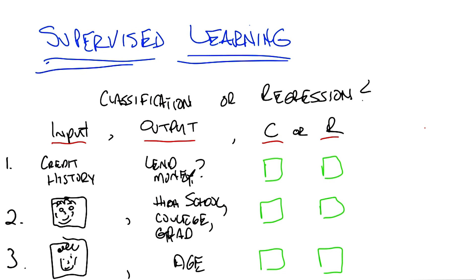Let's give the explanation for the quiz. In some cases, the inputs are discrete or continuous or complicated. In other cases, the outputs can be discrete or continuous or complicated. What matters to determine if something is classification or regression is whether the output is from a discrete, small set, or whether it's some continuous quantity.